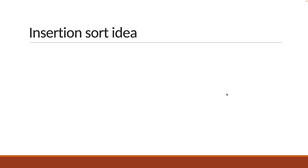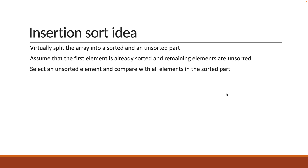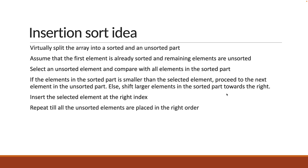Let's first understand the idea behind insertion sort. With insertion sort, you virtually split the array into a sorted and an unsorted part. Since one item by definition is always sorted, we assume the first element is sorted and remaining elements are unsorted. You then select an unsorted element and compare with all the elements in the sorted part. If the elements in the sorted part are smaller than the selected element, proceed to the next element in the unsorted part. Otherwise, shift larger elements in the sorted part towards the right. You then insert the selected element at the right index, ensuring the sorted part remains sorted. Finally, repeat the above steps for all the unsorted elements in the array.